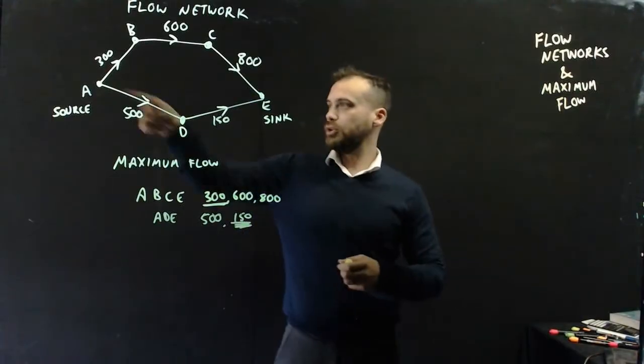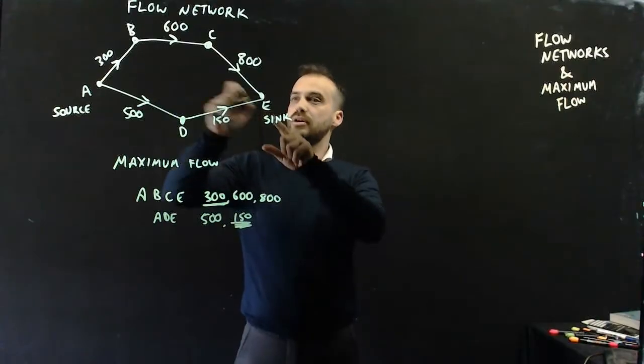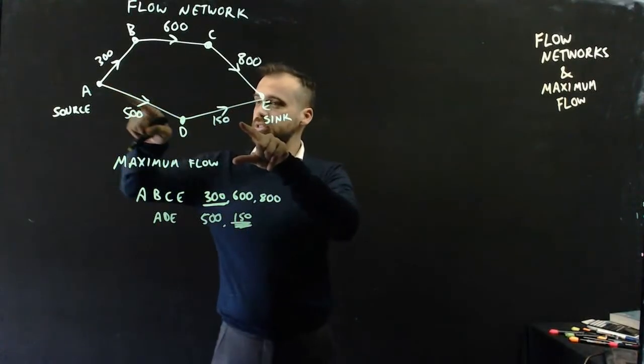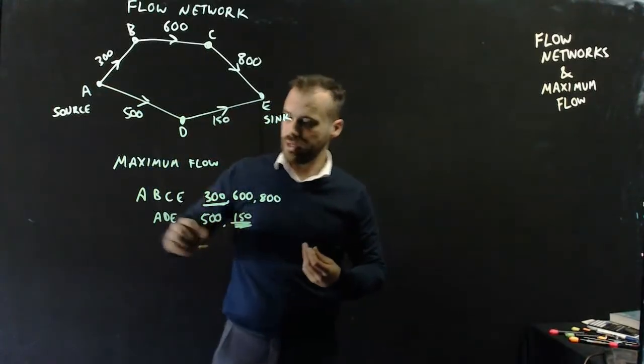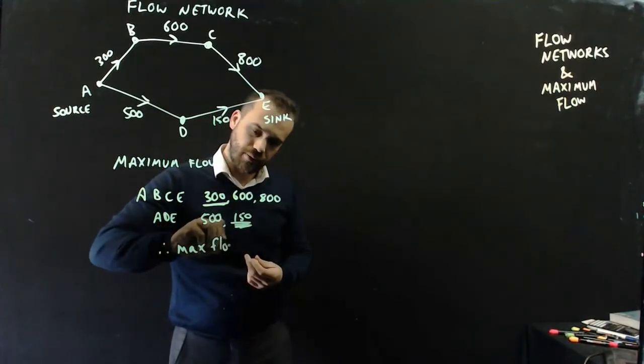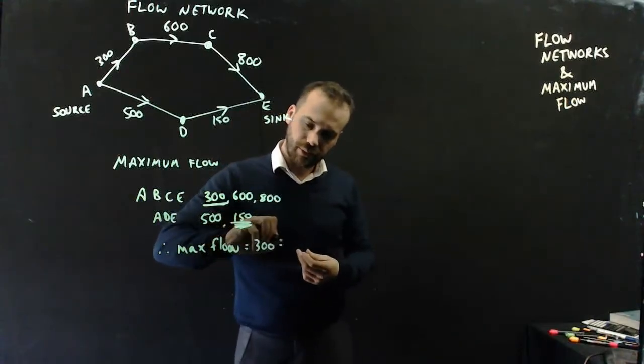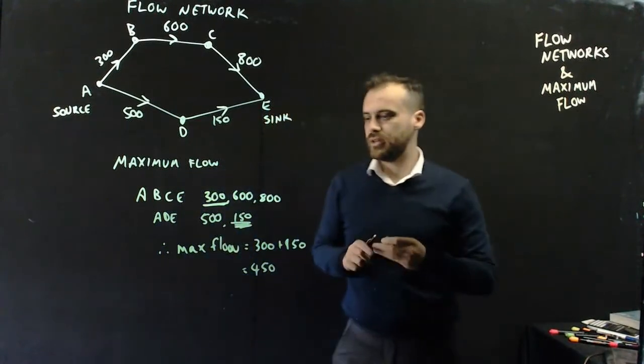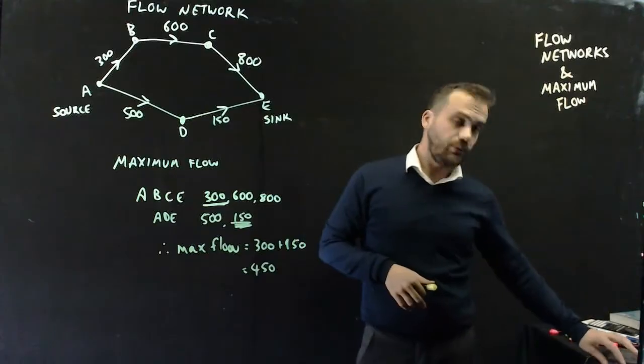That means along the A, B, C, E section, 300 litres per minute can get by. Along A, D, E, 150 litres per minute can get by. Therefore, the max flow equals 300 plus 150, which is 450. That is the maximum flow of this flow network.